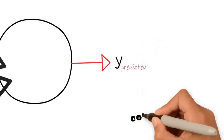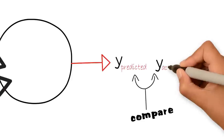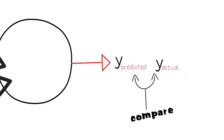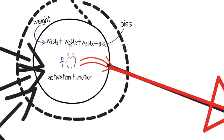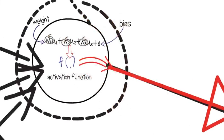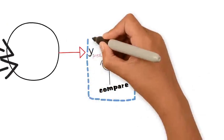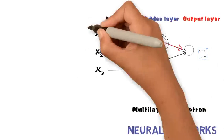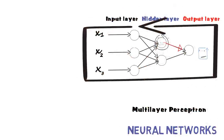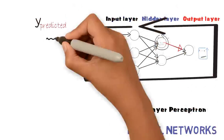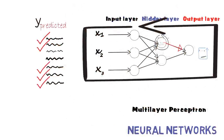The network then compares the prediction with the actual value of the dependent variable. If these do not match, it adjusts all the weights in the network and repeats the process. These iterations get repeated till the neural network is able to produce accurate predictions for most of the observations.